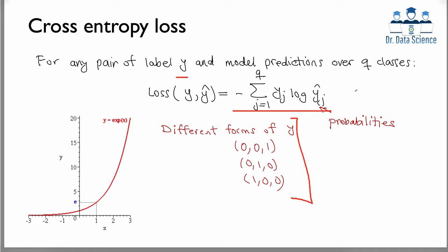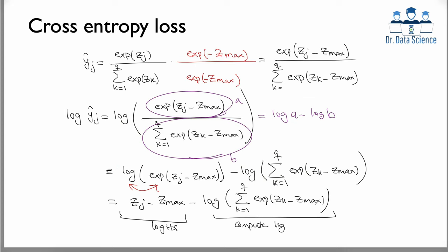The concern with computing this cross-entropy loss is that the softmax involves exponentials, which grow very rapidly and raise numerical stability issues. To address this, we start from the definition of the softmax function — noting that the pre-softmax values z_j are also called logits. We find the maximum value z_max, then multiply both numerator and denominator by e^{-z_max}. This gives a numerically stable simplified form.